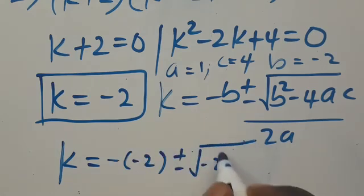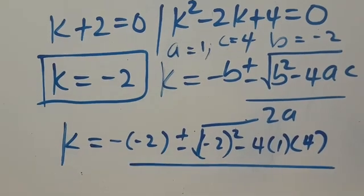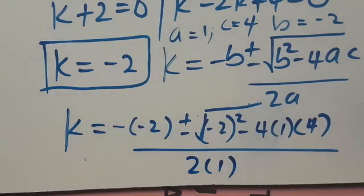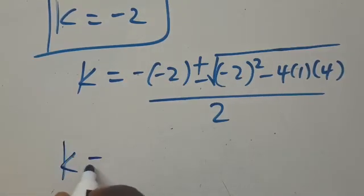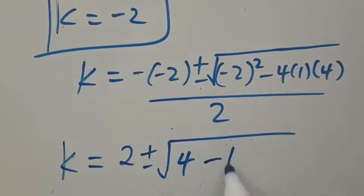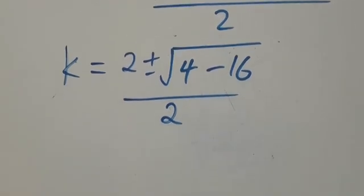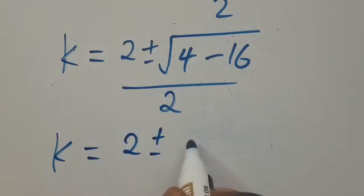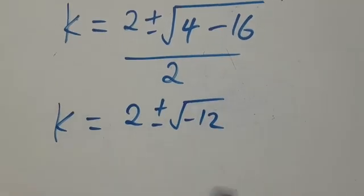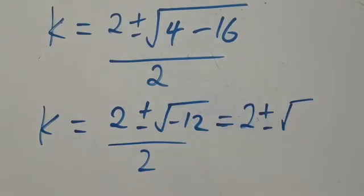So we are going to have k equals minus b, which is minus into minus 2, plus or minus the square root of minus 2, all in brackets, to the power of 2, minus 4, multiplied by a which is 1, multiplied by c which is 4, all divided by 2 multiplied by 1. This gives us k equals 2, plus or minus the square root of 4 minus 16, which is minus 12, divided by 2.